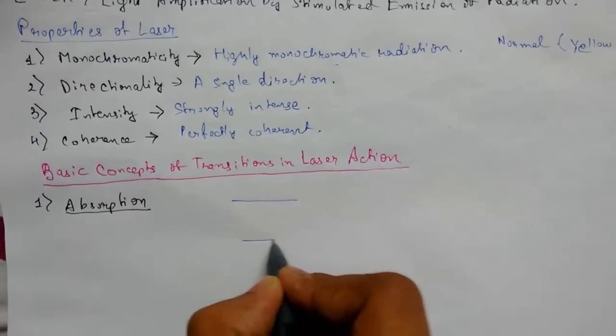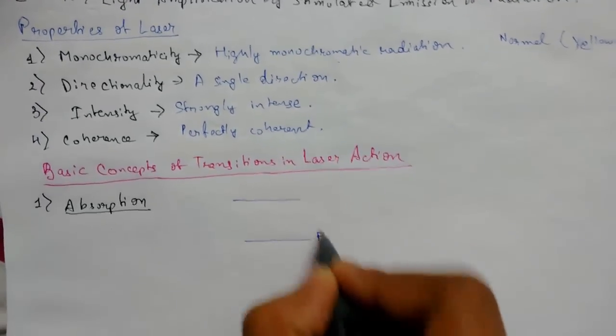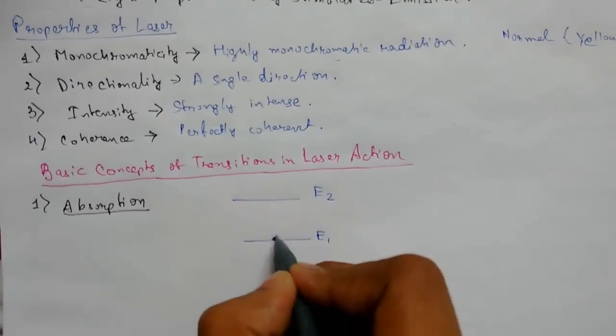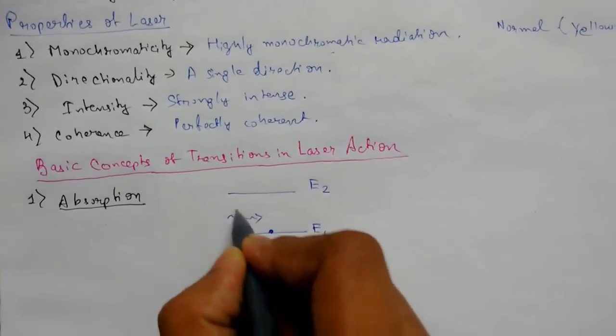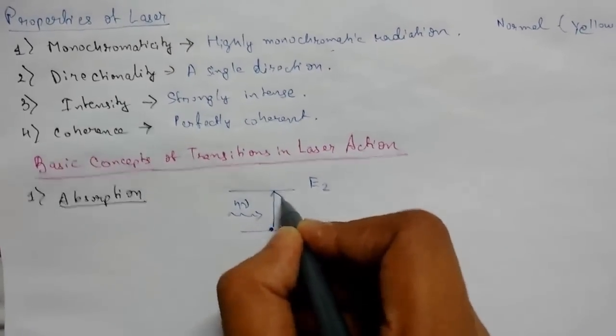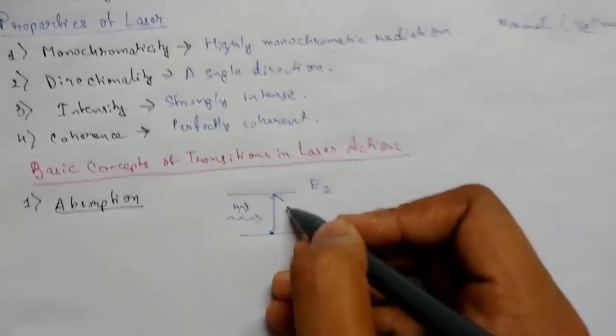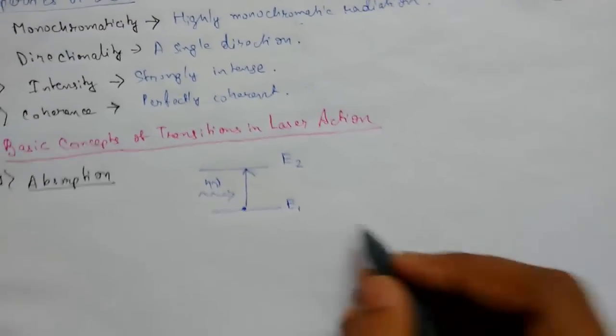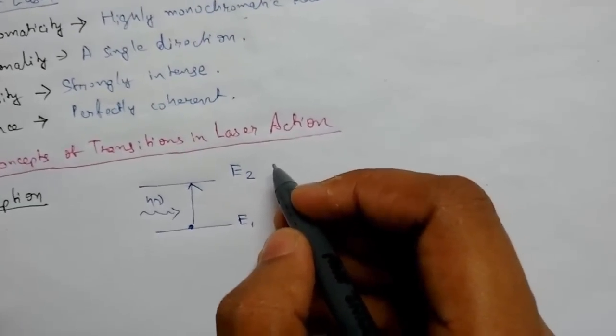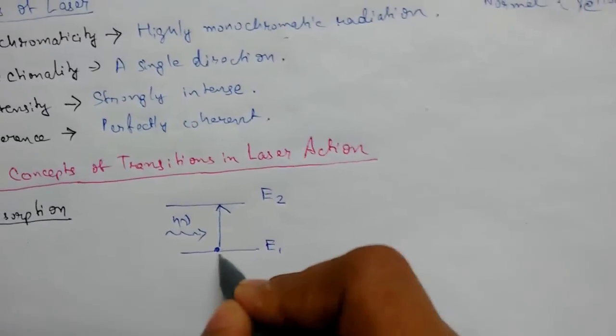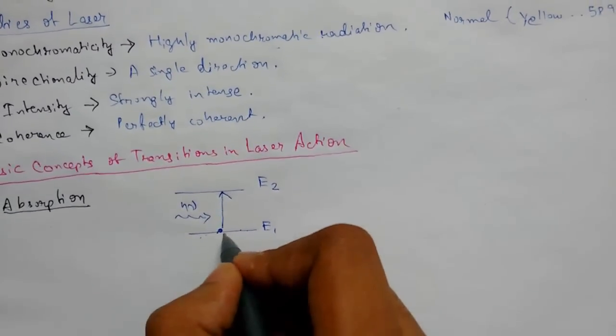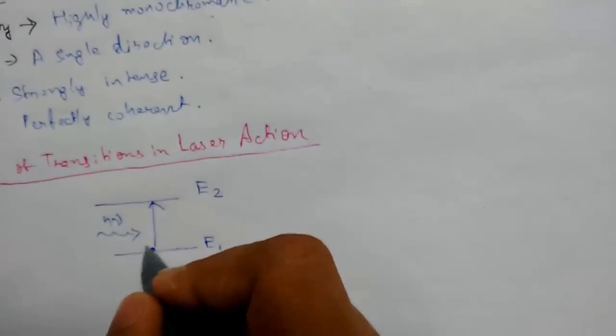Suppose we have energy levels E1 and E2 with atoms here. When a photon of h nu strikes, it moves to the higher energy level. Here the photon is lost. The probability of absorption depends on the number of atoms available in the lower state—more atoms means higher absorption rate—and on the intensity of the light.